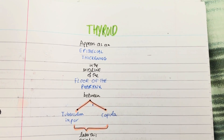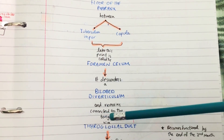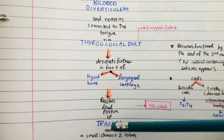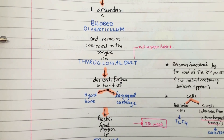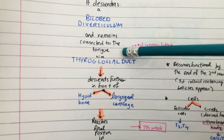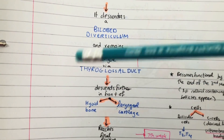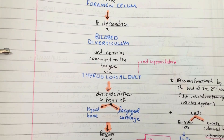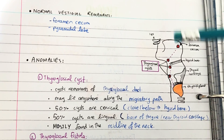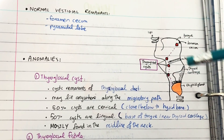So basically in summary: floor of the pharynx, lots of thickening, it becomes really big, then it starts descending, and its final position is the trachea where it has a small isthmus and two lobes. This is important to focus on because a lot of the major common anomalies arise from this. The thyroid gland's normal vestigial remnants are the foramen cecum and the pyramidal lobe. Now we're on to the anomalies.